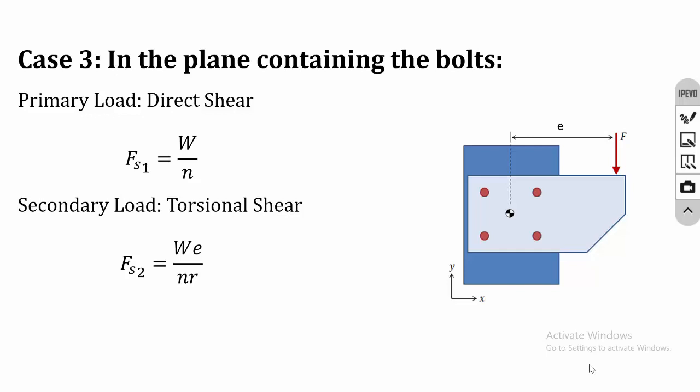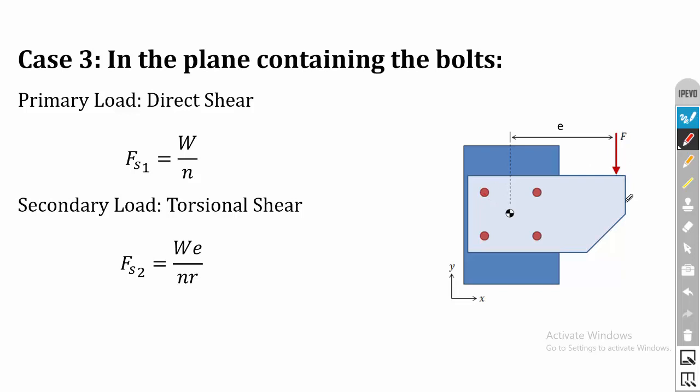In the previous lectures we discussed problems on design of bolted joints carrying eccentric load parallel to the axis of the bolt and perpendicular to the axis of the bolt. Both Case 1 and Case 2 involve load acting in a different plane, but Case 3 is where the load acts on the same plane containing the bolt, as shown in the image.